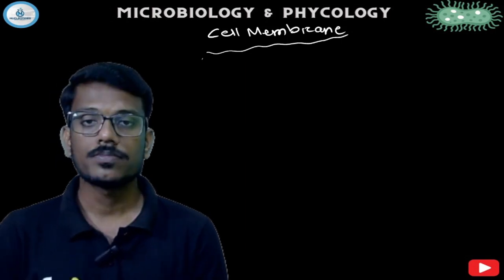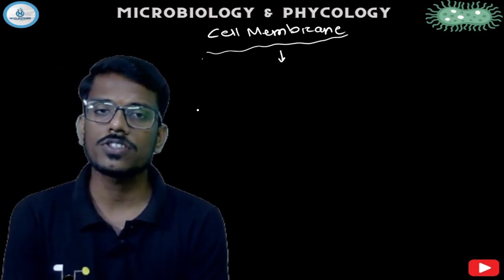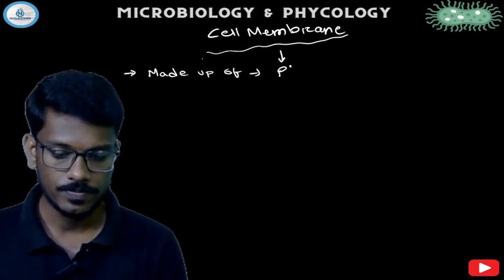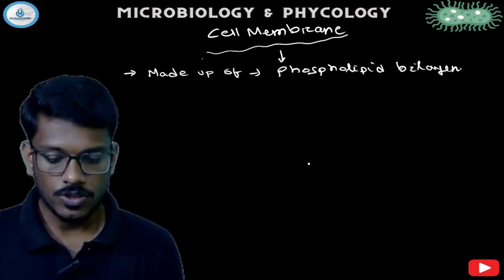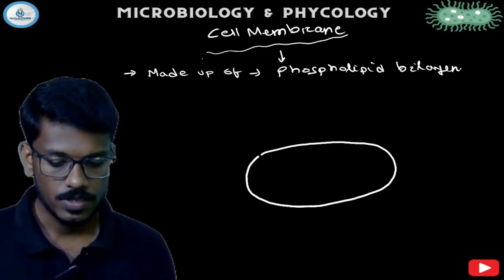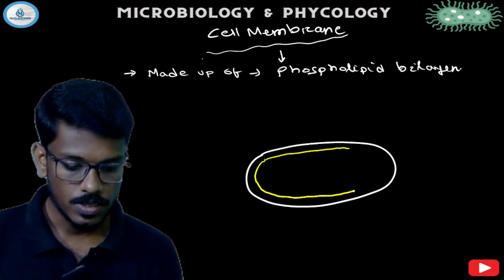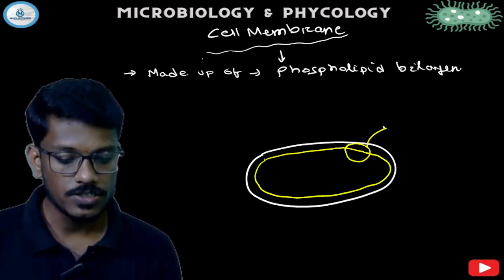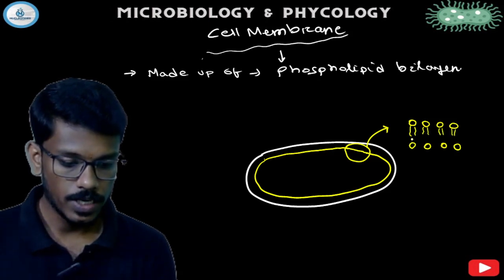Let's look at the cell membrane. Generally, in normal eukaryotic cells and bacterial cells, the cell membrane has the same composition. The bacterial cell membrane is also made up of a phospholipid bilayer — that is, two layers of phospholipids. Here we can see one layer and another layer forming this bilayer structure.